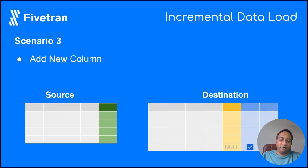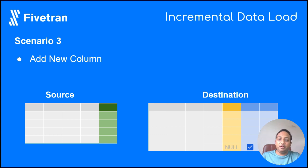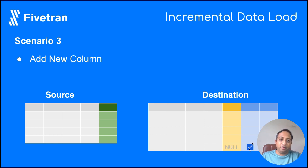When you add a new column at your source, the new column gets added at your destination as well. However, for the row that was already deleted in the previous scenario, the value in the new column will be null, and the FITRAN_deleted column is also marked as true for that row.